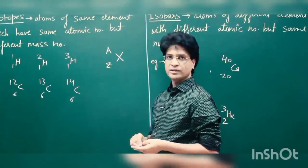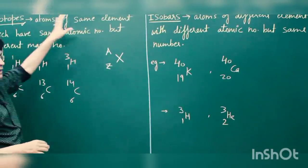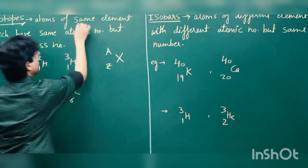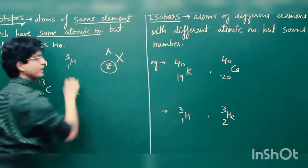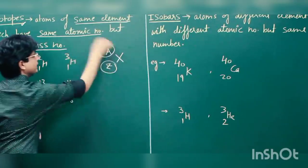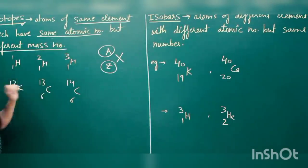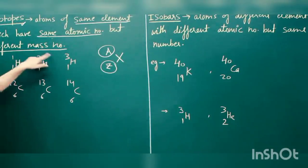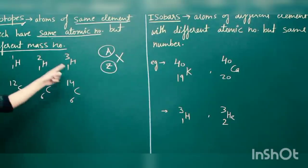One species is called isotopes. Isotopes are atoms of the same element having the same atomic number — same Z value — but different mass numbers. For example, hydrogen has three isotopes with the same atomic number but different mass numbers. The second is called deuterium and the third is called tritium. So isotopes are atoms of the same element with same atomic number but different mass number.